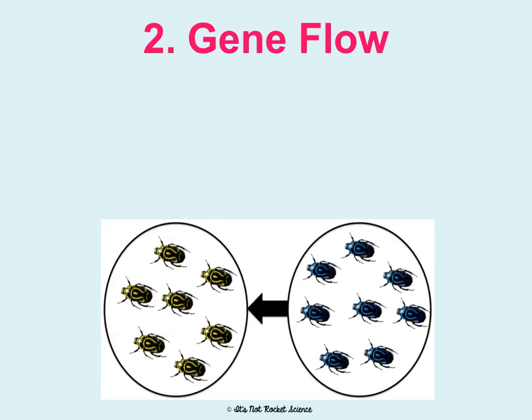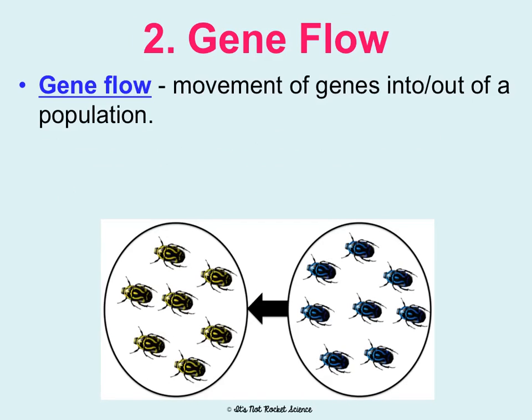Another mechanism of microevolution is gene flow, which is basically the movement of genes into or out of a population. It's basically migration, but it's not just migration — once you migrate, you also have to reproduce with the other organisms there in order to introduce your genes. Just moving somewhere doesn't introduce your genes to anybody.